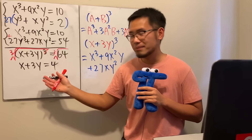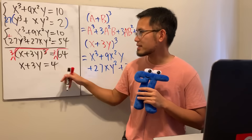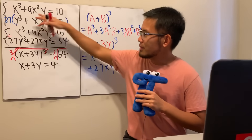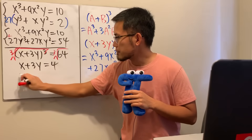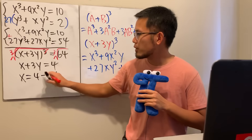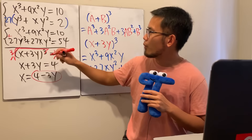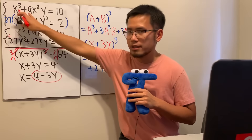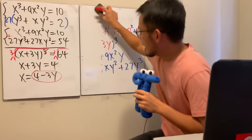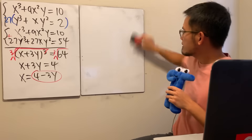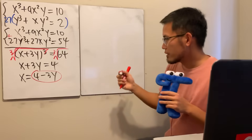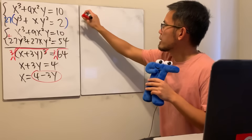Now we're in business! We move terms to get x = 4 − 3y, which is much easier to handle compared to the original equations. I'll plug this into the second equation — that way I avoid having to expand a cube.